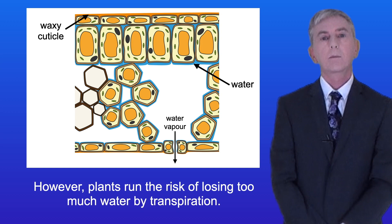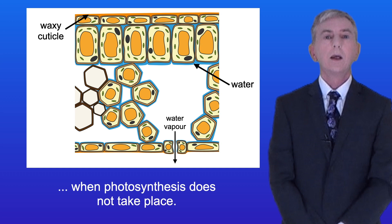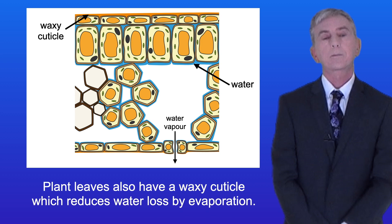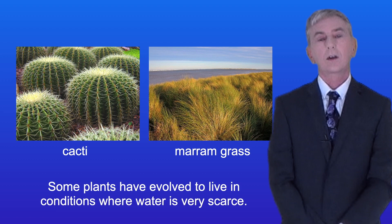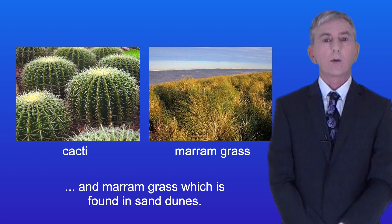Plants do have some adaptations to reduce water loss. For example, plants close their stomata at night when photosynthesis does not take place. Plant leaves also have a waxy cuticle which reduces water loss by evaporation. Some plants have evolved to live in conditions where water is very scarce — scientists call these plants xerophytes. We're going to look at two examples: cacti, which are found in deserts, and marram grass, which is found in sand dunes.